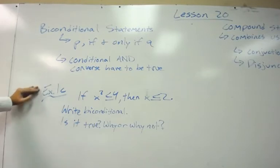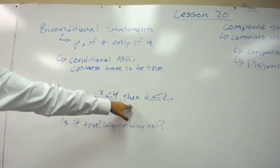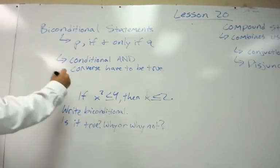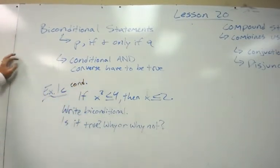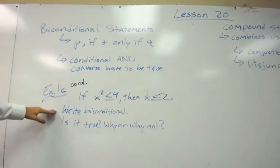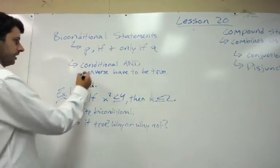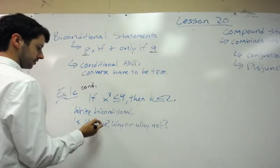So let's look at an example. Example 1C specifically. It says, if x squared is less than or equal to 4, then x is less than or equal to 2. That is your conditional statement. What we first want to do is write the biconditional statement. So we have to identify P, because we need to know P and then Q.